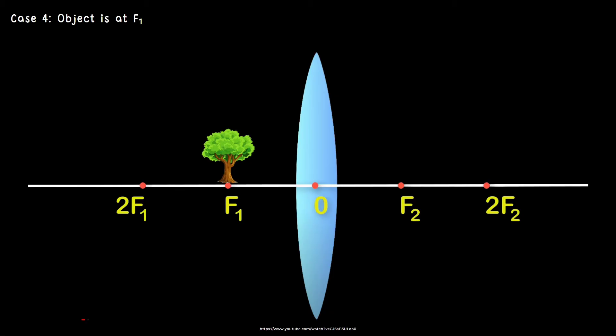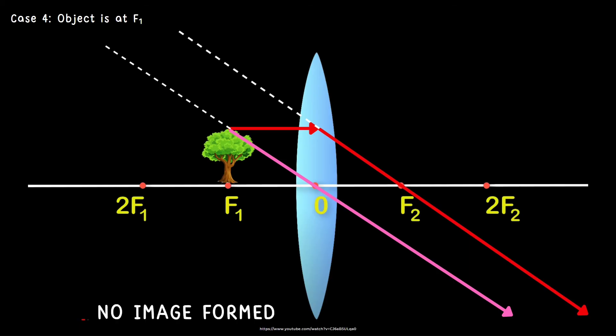Our next case is what if the object is at F1. Let's do rule 1 and rule 2 again. If you notice, there is no intersection. So we have to extend. And since there is no intersection, therefore, there is no image formed.